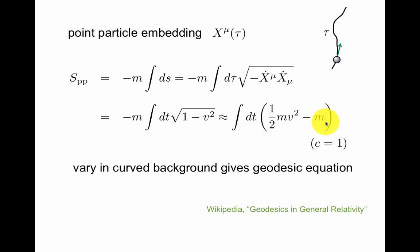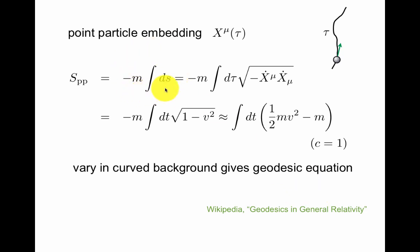Of course c we set to 1. If you're not familiar with these units go back and review it in Zwiebach's book — it's very well explained there. What is really nice about this is if you vary this original action, which is very compact, in a curved background you get the geodesic equation of general relativity. This is nicely reviewed on this Wikipedia page as a reminder. So this is a powerful way to talk about actions of a point particle moving in a possibly non-trivial background.